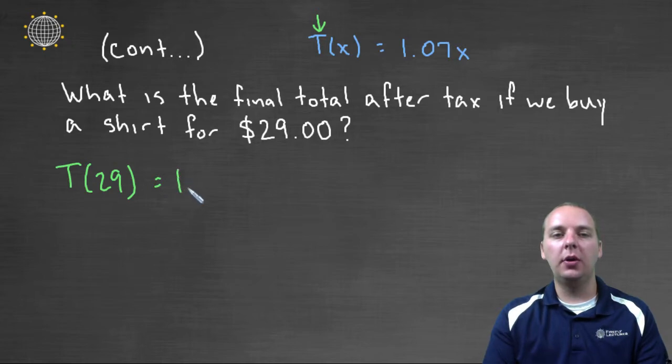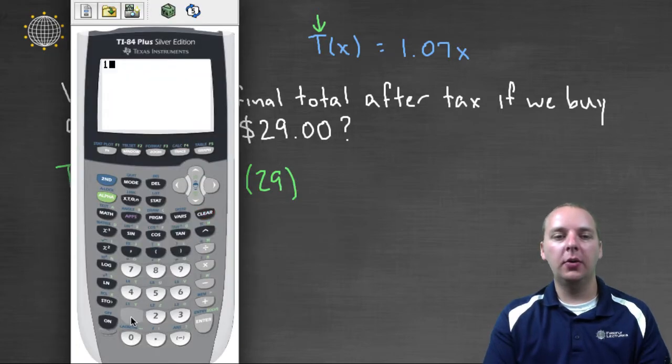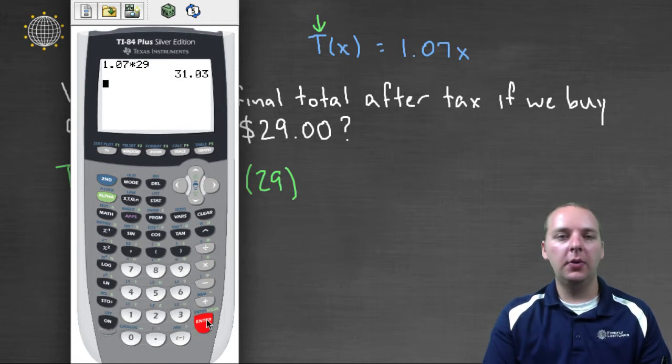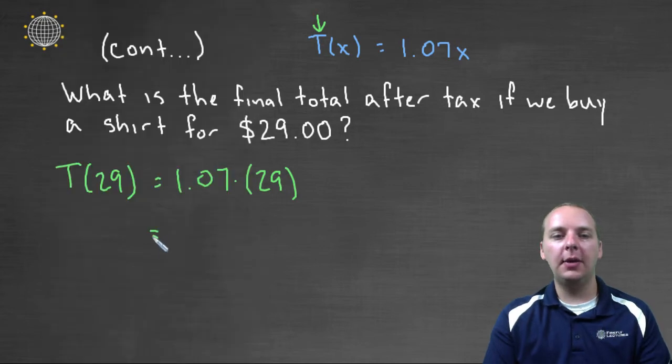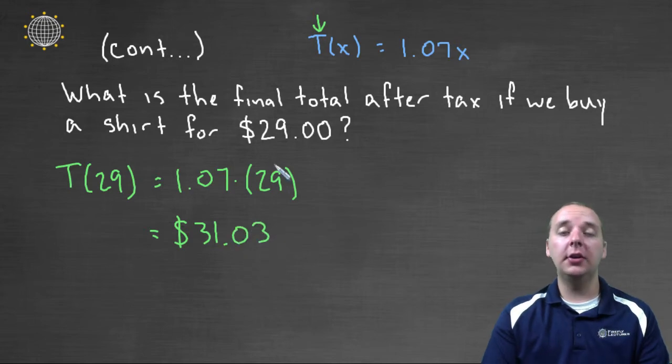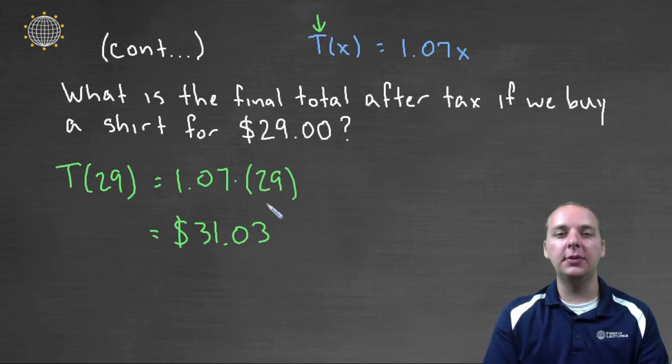So we'll take 1.07 times twenty nine, and we can just do that in our calculator real quick. 1.07 times twenty nine, we get a total of thirty one point oh three. And that makes perfectly good sense. Thirty one dollars and three cents. So a shirt that cost twenty nine dollars after tax, assuming tax is seven percent, would be thirty one dollars and three cents.